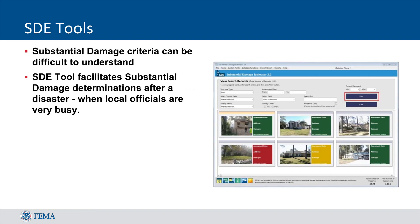One of the primary objectives of the SDE tool is to help local officials carry out the important process of determining substantial damage at a time when they are often very busy and may not have time to thoroughly make these determinations with existing tools and information. The tool creates a streamlined approach that allows users to evaluate structures across the community in a quick and consistent manner, thereby allowing them to stay in compliance with the requirements set forth in the National Flood Insurance Program.